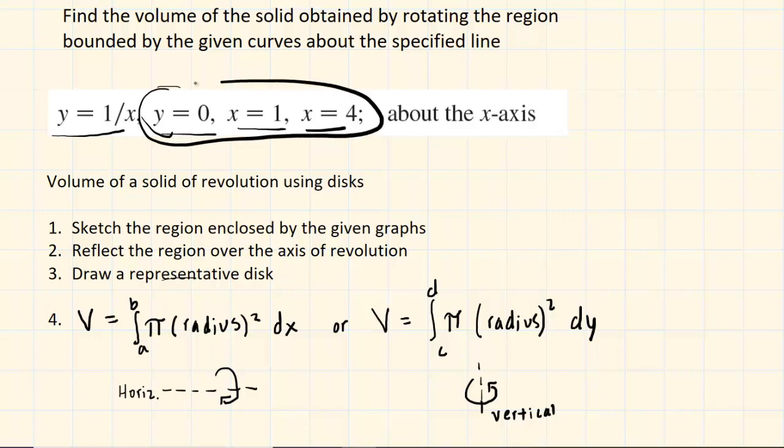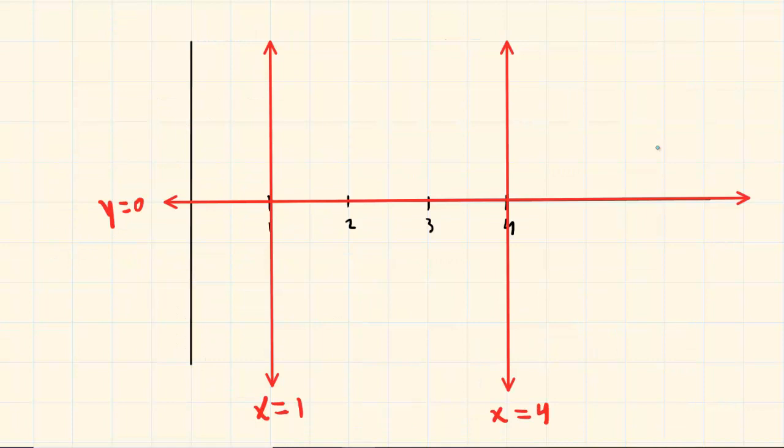Here are the three horizontal and vertical line segments. The fourth graph was y equals one over x. Perhaps the easiest thing to do is to plug in x values that lie between x equals one and x equals four, including x equals one and four.